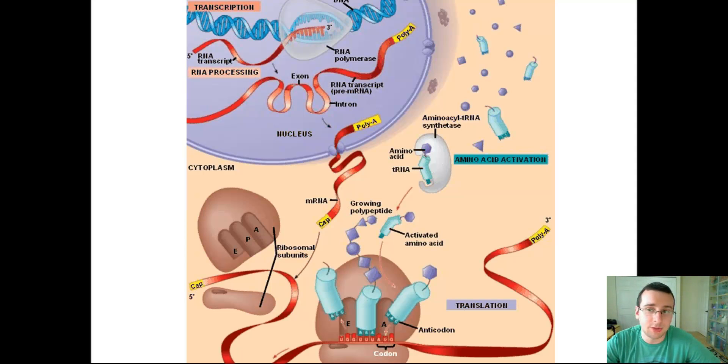That's going to be happening with the help of spliceosomes and ligase. Then it leaves through the nuclear pores and immediately goes into the cytoplasm where enzymes are looking to destroy it. But if they don't get destroyed, a ribosome will attach themselves to it.